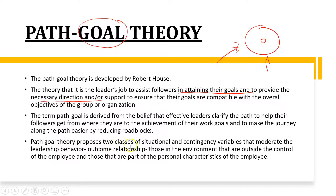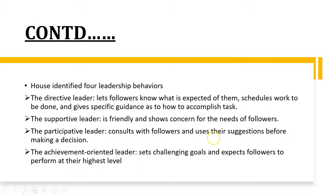This theory operates in two different condition classes: situational and contingency. Situational means that according to the situation, it will adapt to the conditions. Contingency means that according to variable possible scenarios, the leader will take decisions. In path goal theory, four different types of leaders are defined.